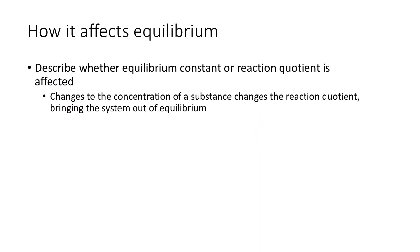Does adding or removing a species affect the equilibrium constant or the reaction quotient? If you remember from the equilibrium constant video, the only thing that affects the equilibrium constant is the temperature. That means we're going to change the reaction quotient. The reaction quotient is the same expression as the equilibrium constant — it's just that it can be at non-equilibrium or at equilibrium. So if you change one of the concentrations, you change the values within that expression, and therefore that value changes — that's the reaction quotient that changes.